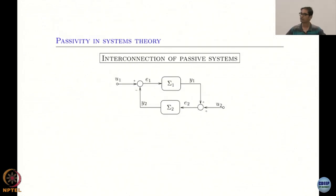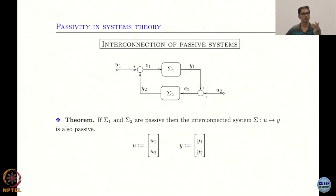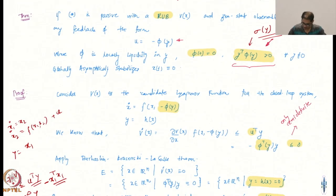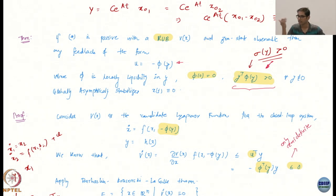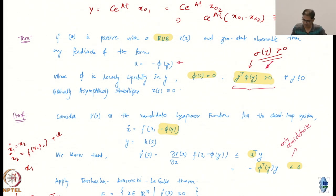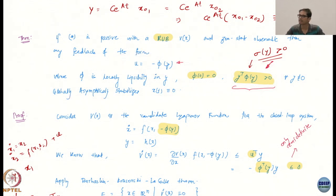He talked about these very useful concepts — this is why you can keep extending the notion of passivity to larger and larger systems and add interconnections. Essentially, if you interconnect two passive systems, you retain the passivity property. And if you have passivity and zero state observability, then you can design a controller as a function of just the output, which globally asymptotically stabilizes the system.